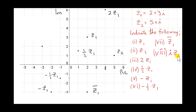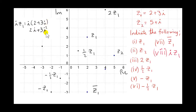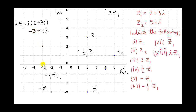Next we look at i times z1. We multiply i by 2 plus 3i: i times 2 is 2i, and i times 3i is 3i squared. Since i squared is minus 1, we get minus 3. Writing the real part first, we get minus 3 plus 2i. So the real part is minus 3 and the imaginary part is plus 2 — here we have iz1.